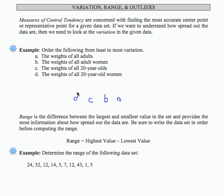So the order then, from least to most variation, starts with the smallest variation in the weights of all 20-year-old women, and goes up to the most variation in the weights of all adults.